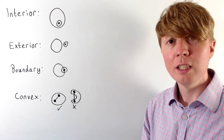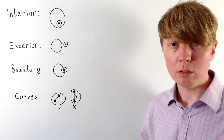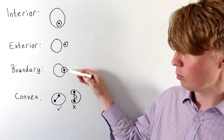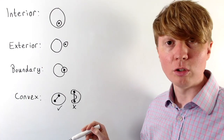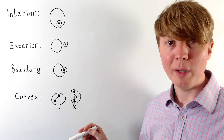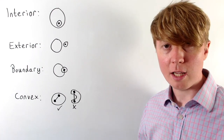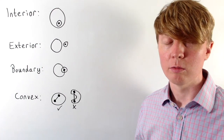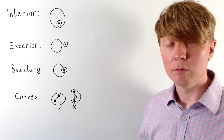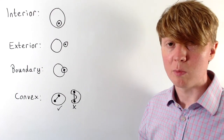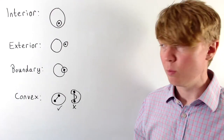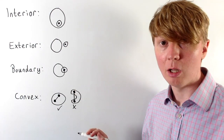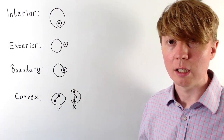For example, if you've got a circle and you include the circumference, then the points on the circumference belong to the set and also lie on the boundary. But you could have all the points in a circle not counting its circumference — a point on the circumference would still count as being on the boundary. So boundary points don't necessarily have to belong to your set.